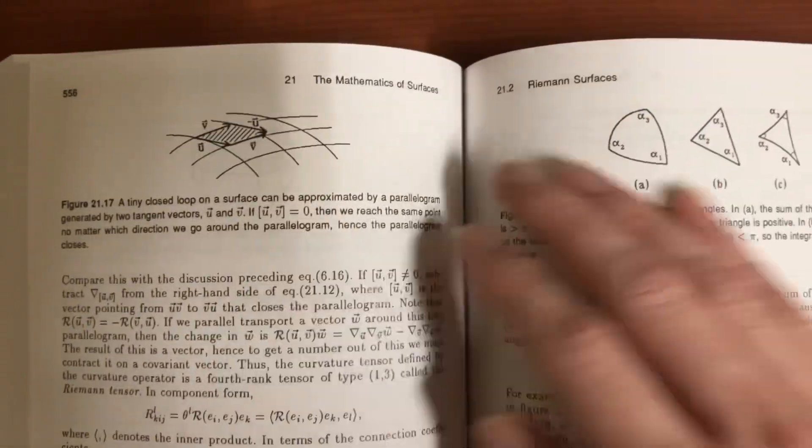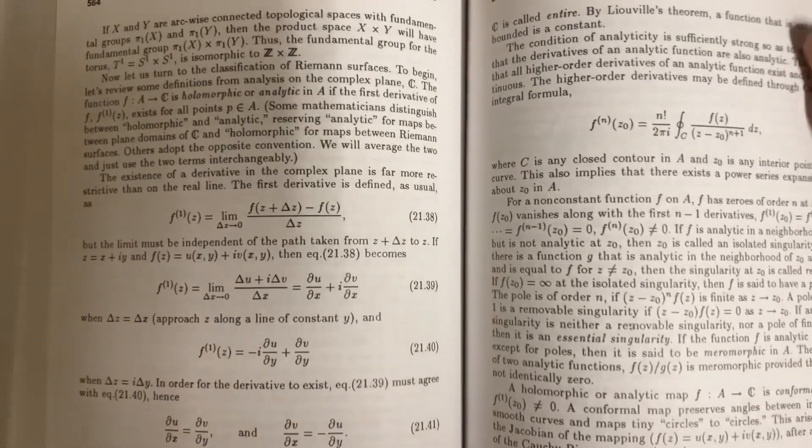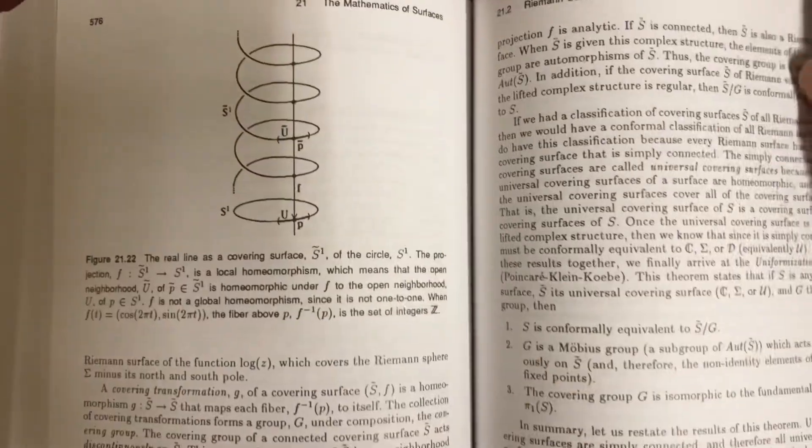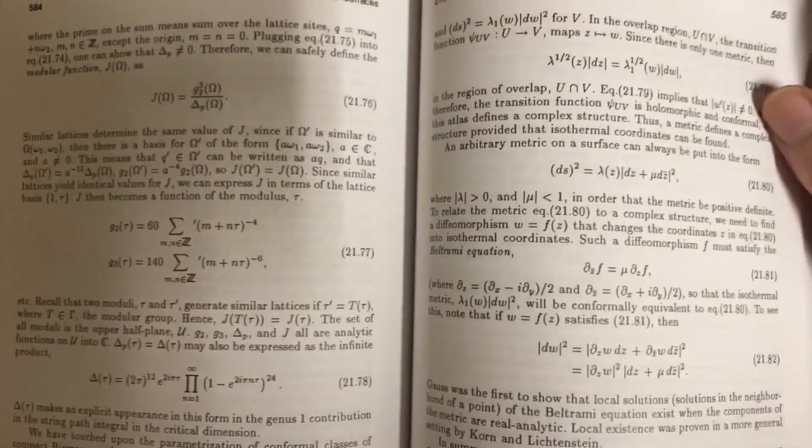Look at the manifolds, the Riemann surfaces. These are the different types of surfaces we could have, like the folds and the curves of the surfaces.